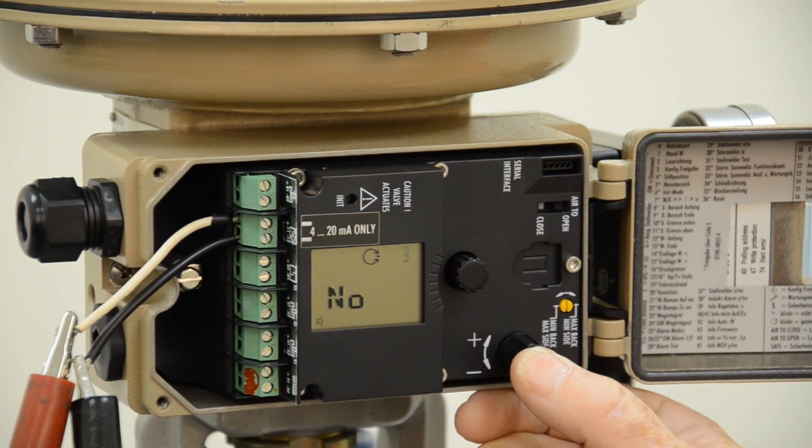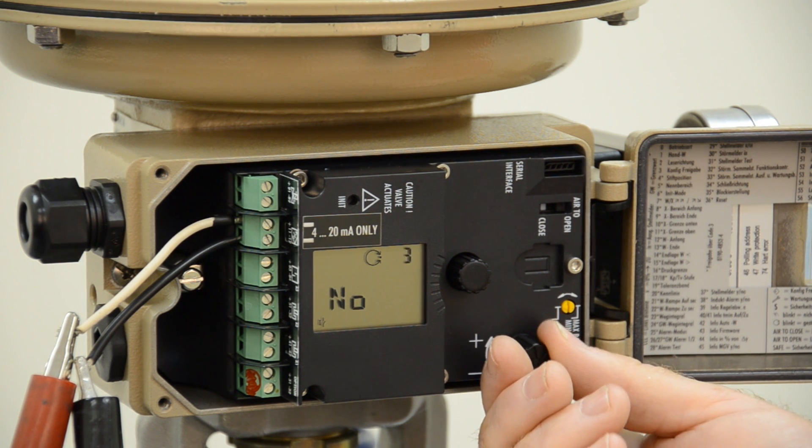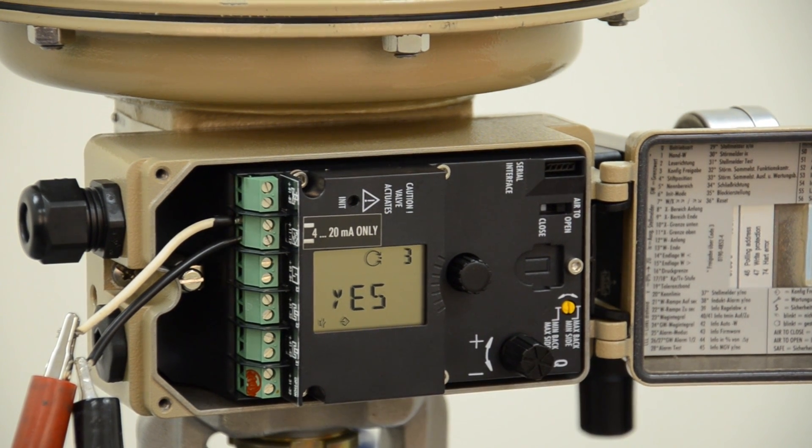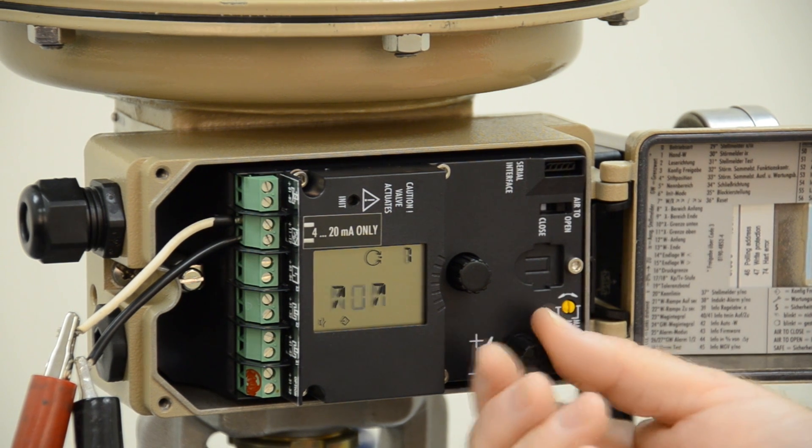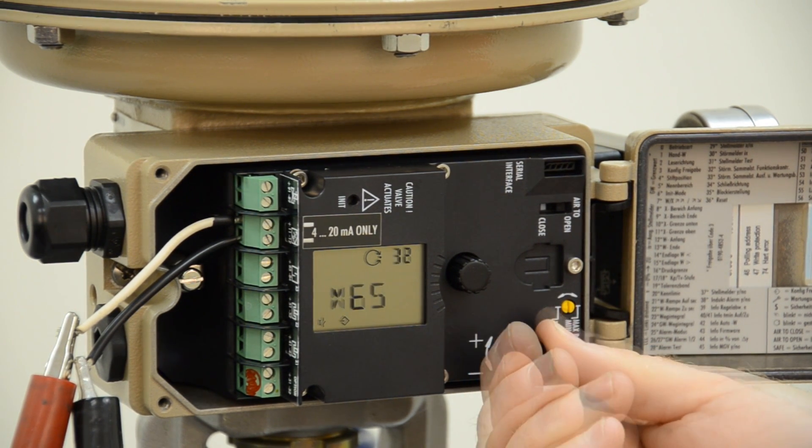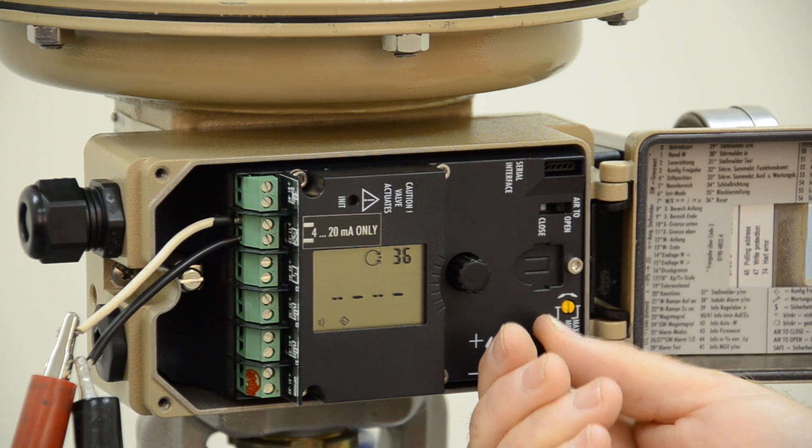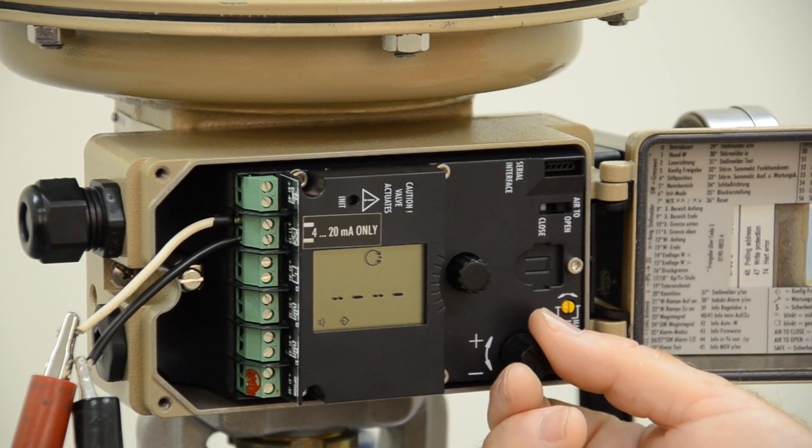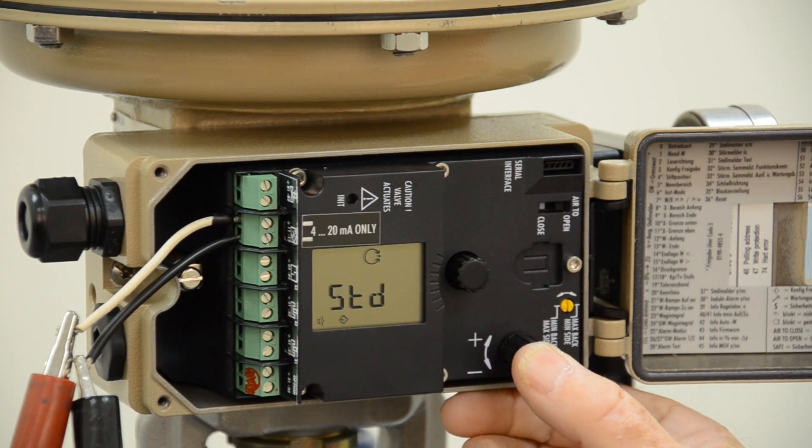You will press the button. When it starts flashing, then we will turn the rotary button again. We are to turn it to yes. Pressing it again acknowledges this selection. Our next code is going to be 36. So we turn our rotary button to code 36 and we press. This is our default and we want to change this to standard and acknowledge.